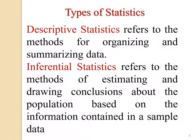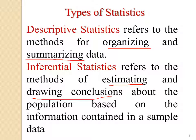Next, type of statistics. We can divide statistics into two main types. First, descriptive statistics — methods for organizing and summarizing data. Some textbooks call this summary statistics. Second, inferential statistics — methods of estimating and drawing conclusions about a population based on information contained in sample data. In the first set of videos we will discuss descriptive statistics, and then inferential statistics.